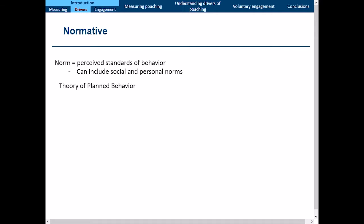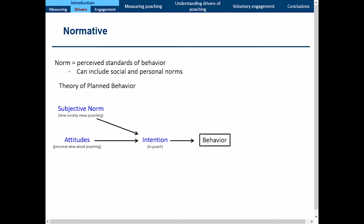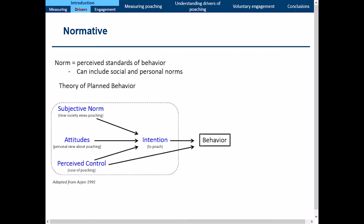In social psychology, the theory of planned behavior has been used to look at a vast majority of behaviors, including environmental behavior. The behavior of poaching is moderated by your intention to poach, which is shaped by three predeterminates: the subjective norm (how society views poaching), your attitude (your personal view about poaching and its management), and your perceived behavioral control (the ease or difficulty of poaching). The main point is that the focus is on the individual micro scale, and it does not generally address the macro scale issues we know are important.